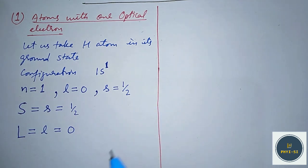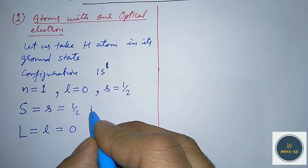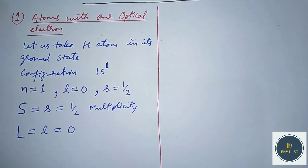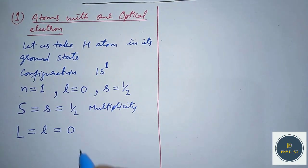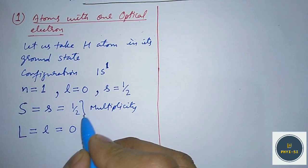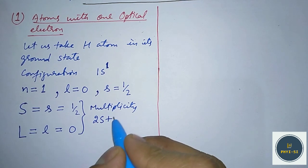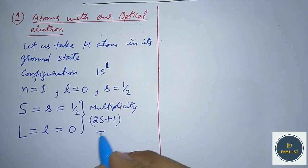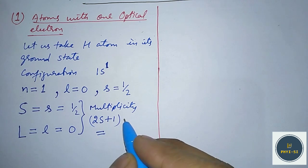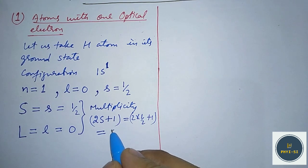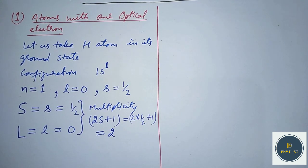The first thing to find is the multiplicity — how many levels we can have with this particular arrangement. The multiplicity is always equal to 2S+1. For this case, S equals 1/2, so it becomes 2×(1/2)+1, which equals 2. So the multiplicity is 2.